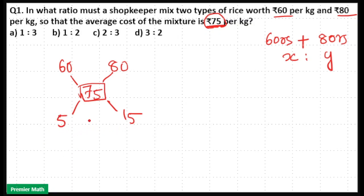This is your new ratio, that is 5 is to 15. When you cancel it with 5, 5 divided by 5 equals 1, 15 divided by 5 equals 3.